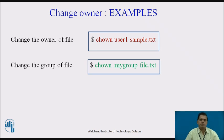Here is the example of change owner. To change the owner of the file, type: chown user1 sample.txt. To change the group of the file, type: chown mygroup filename.txt. In the first example, the owner of the file sample.txt is changed, and in the second example, the group of the file filename.txt is changed.